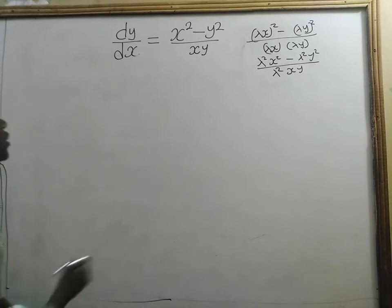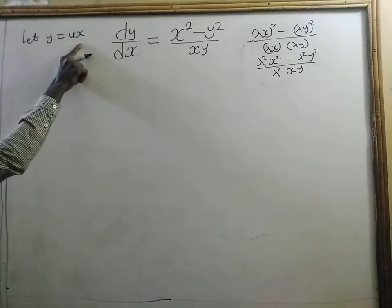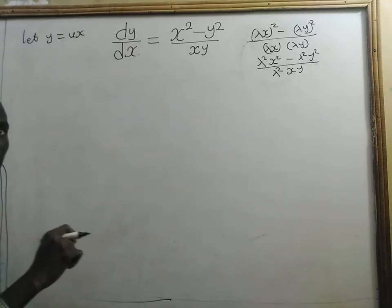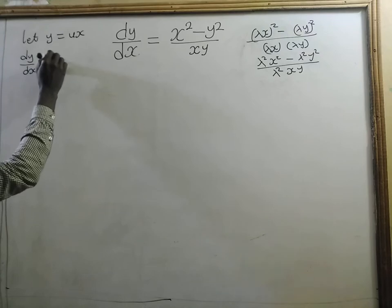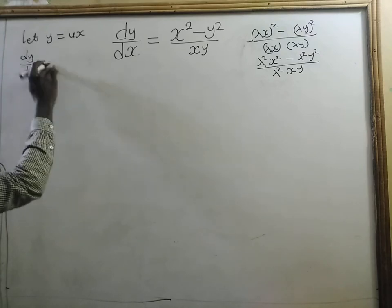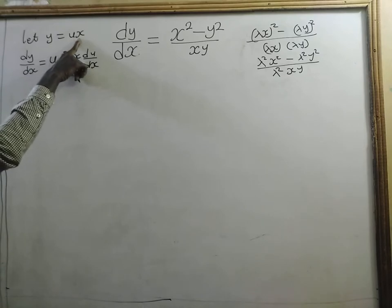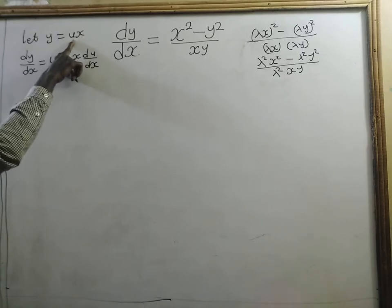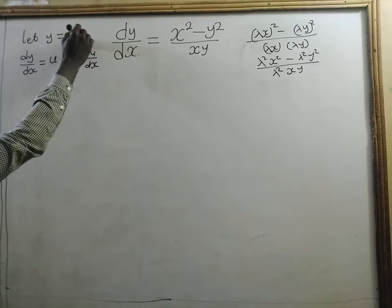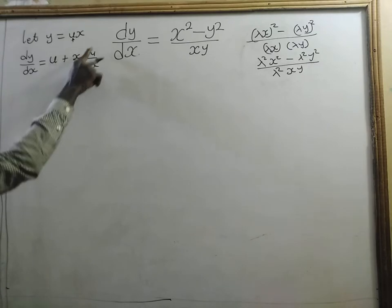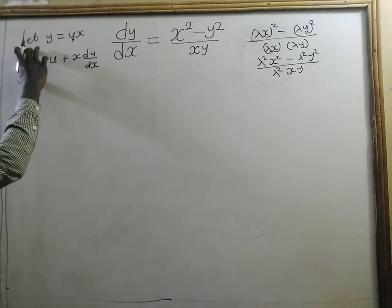We are solving it in a simple way. We let y equal to ux, and then differentiate it implicitly with respect to x — check the description for my video on implicit differentiation. We are going to have dy/dx equal to u plus x du/dx. If I differentiate ux with respect to x, I get u plus x times du/dx.